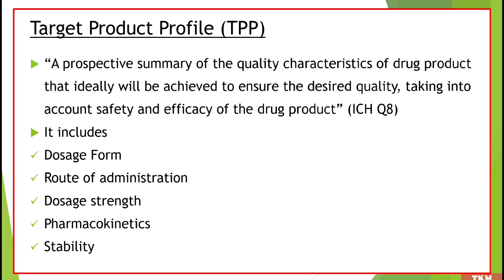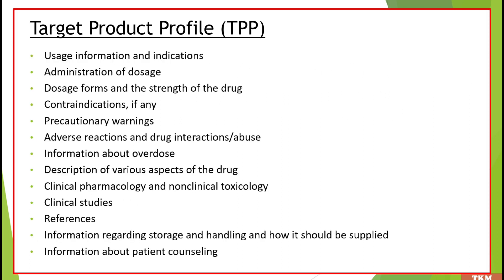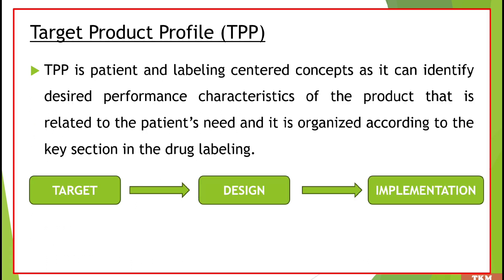TPP includes dosage form, route of administration, dosage strength, pharmacokinetics, stability, usage information, indication, adverse reactions, information about overdosing, description of various aspects of the drug, clinical pharmacology, toxicology studies, clinical studies, references, storage and handling conditions, and even patient counseling. Anything and everything related to the drug or product that we want to manufacture is included in the target product profile.